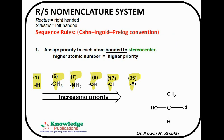Sequence Rule No. 1 says: assign priority to each item bonded to the chiral carbon on the basis of the atomic number of the first atom attached to the chiral carbon. Here are some examples of groups of atoms with increasing priority on the basis of atomic number. In this molecule, the four different groups attached to this chiral carbon are CH3 (methyl group), chlorine, hydrogen, and OH (hydroxyl group). How to assign the priority?